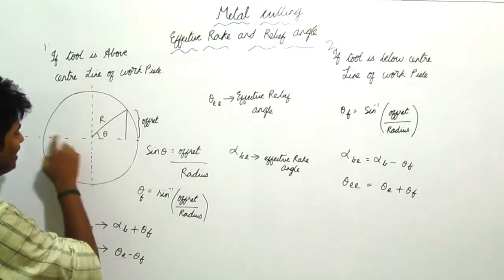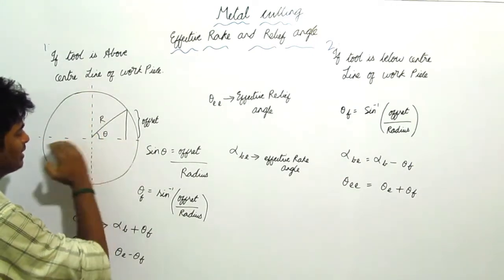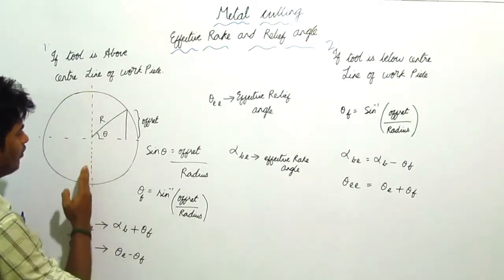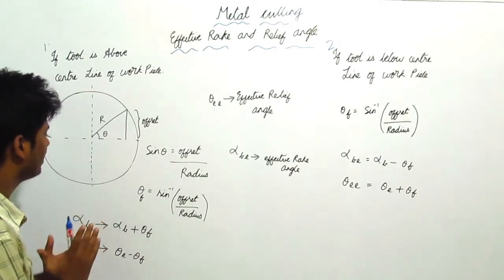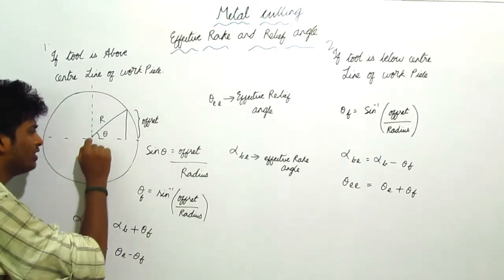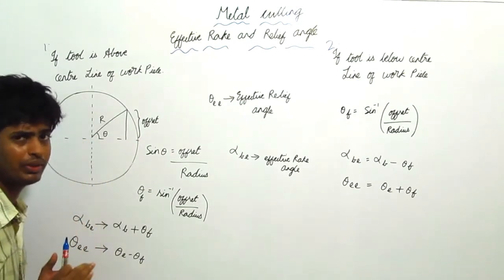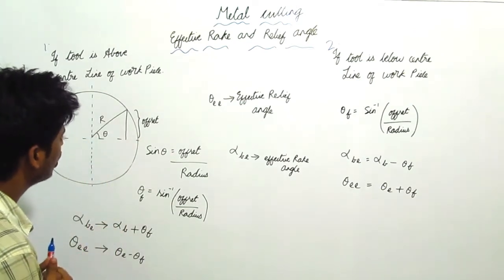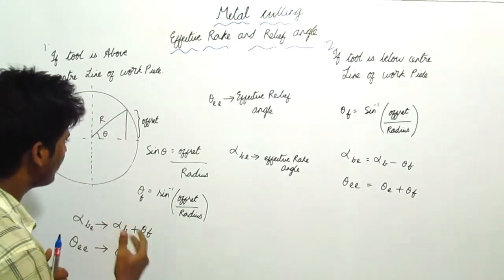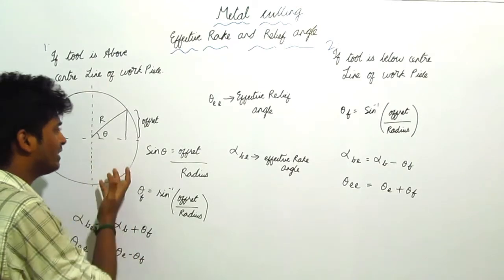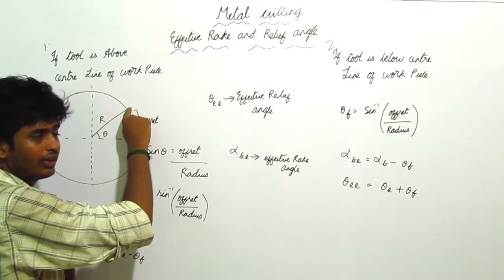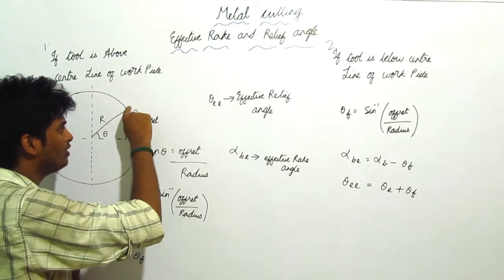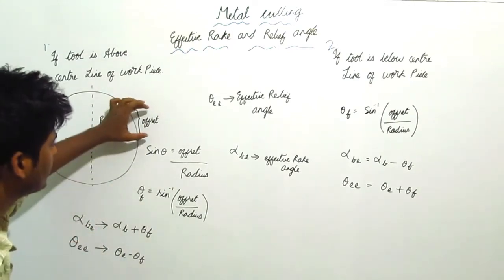This is the workpiece and this is the center line of the workpiece. In most common cases, the tool will be coinciding at the center point of the workpiece. But in some cases, due to some offset, the tool may be positioned elsewhere — for example, if the tool is coinciding here, then there will be some offset.